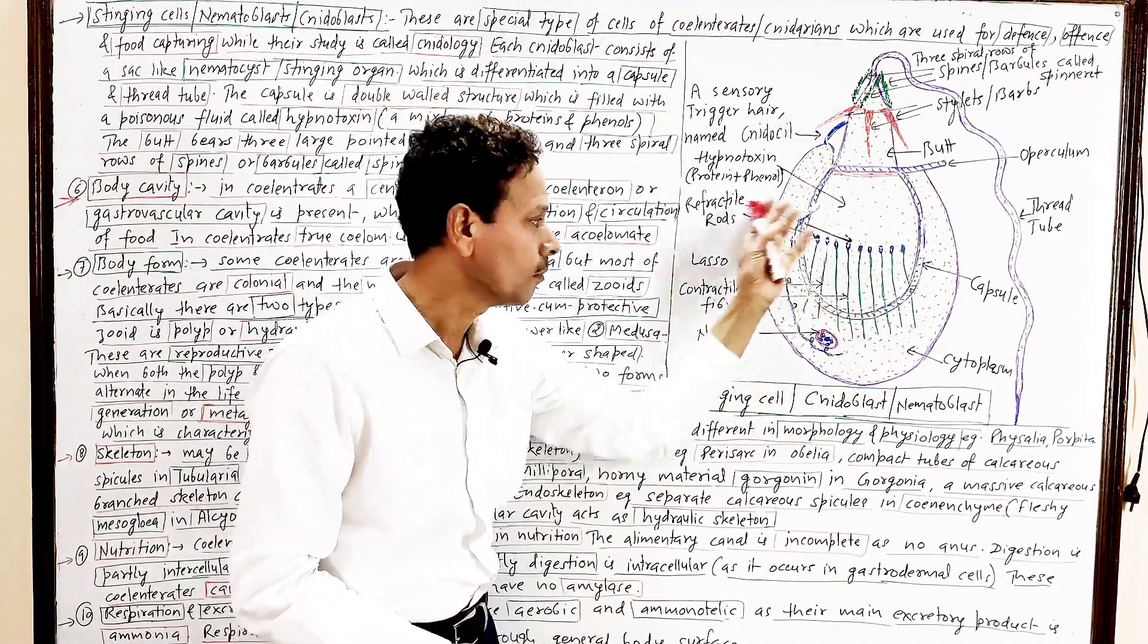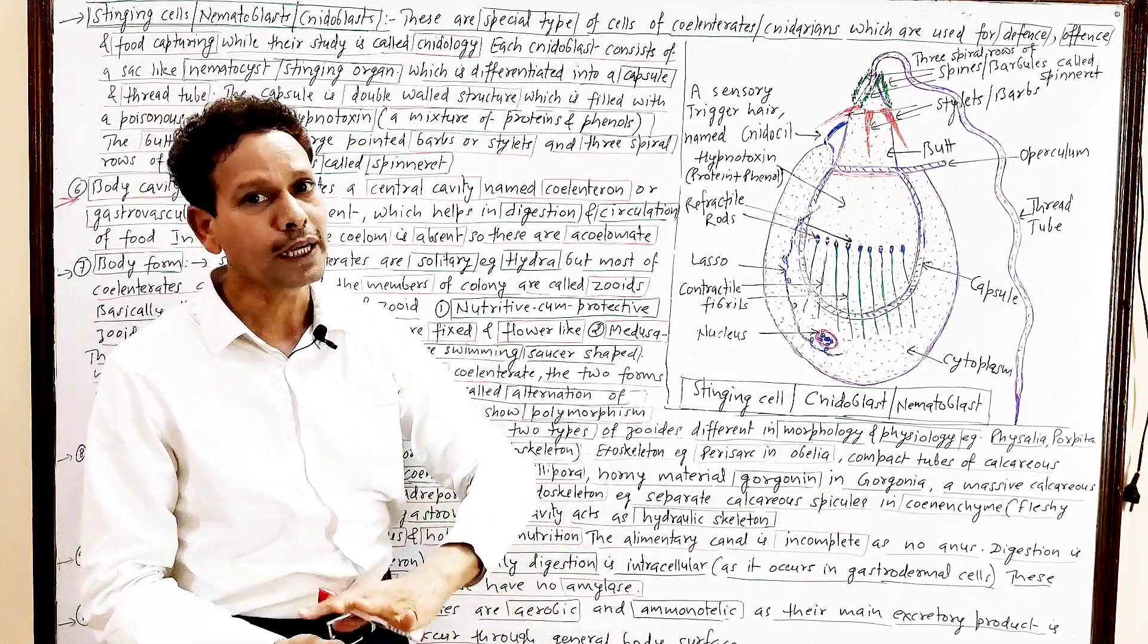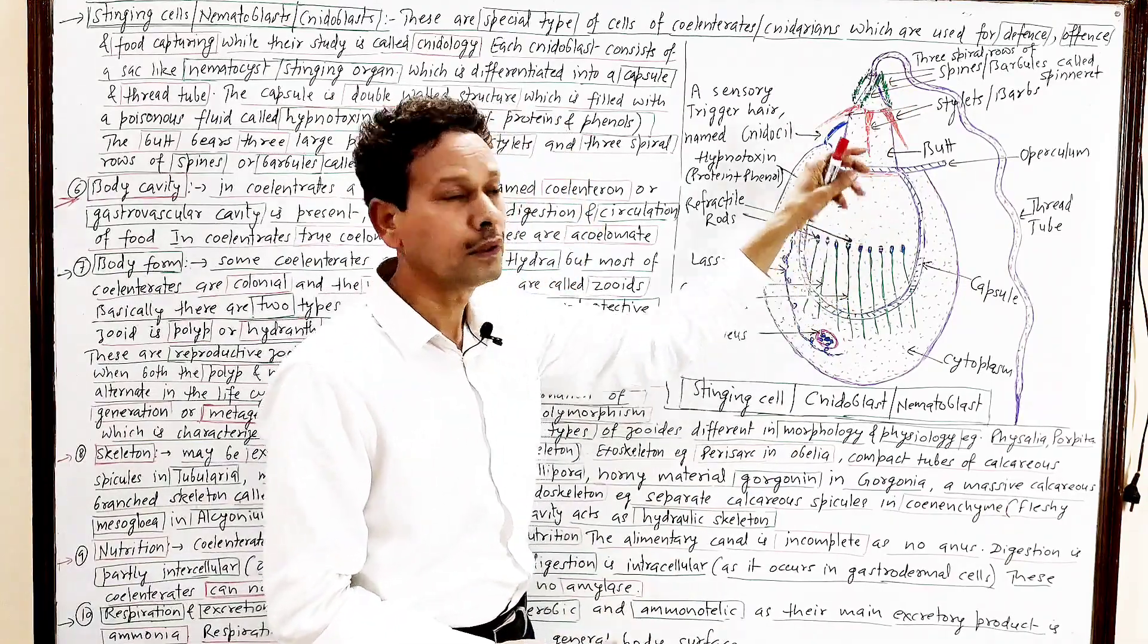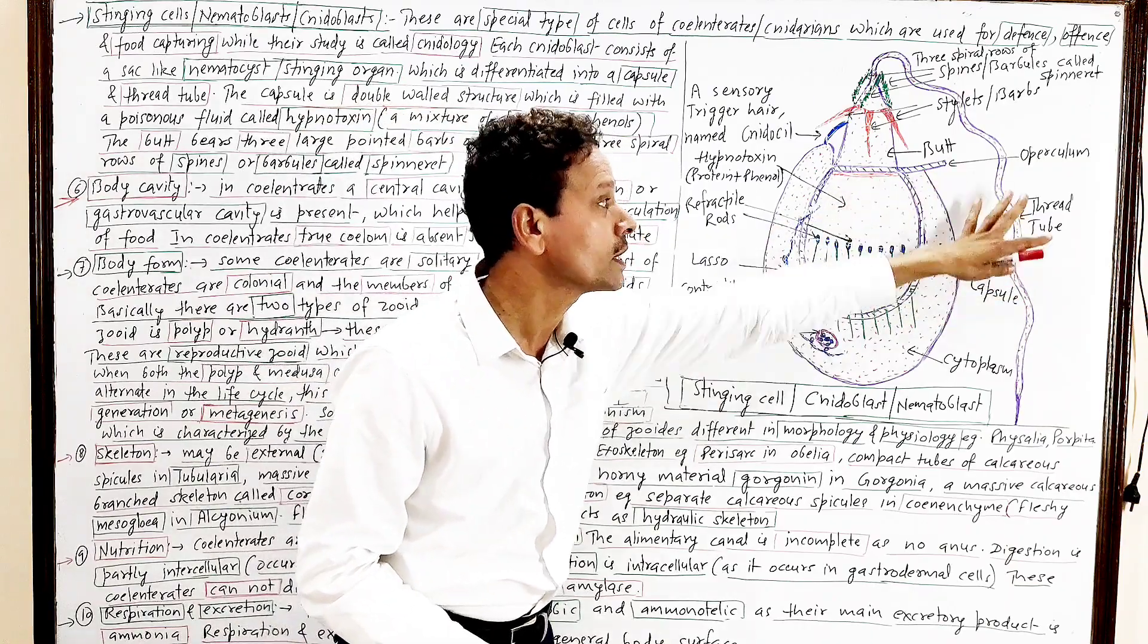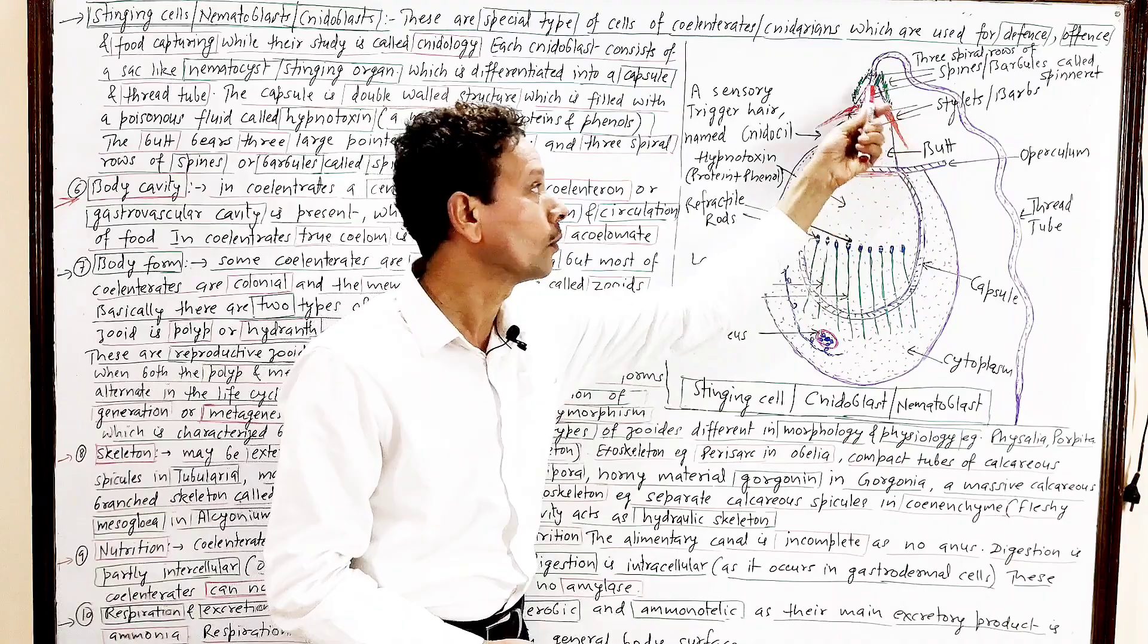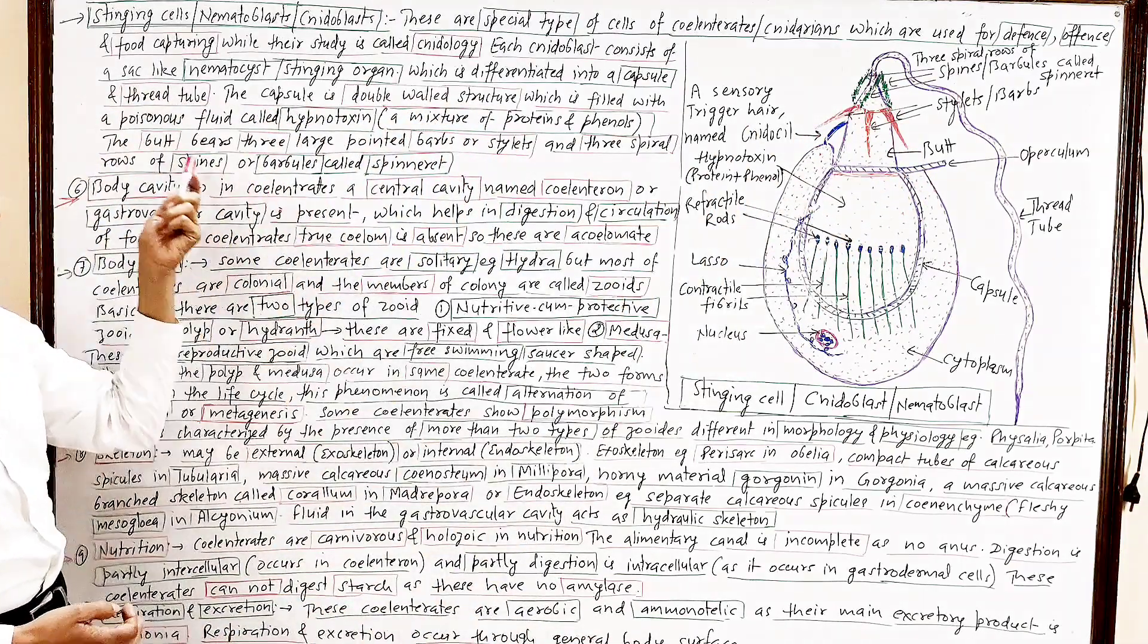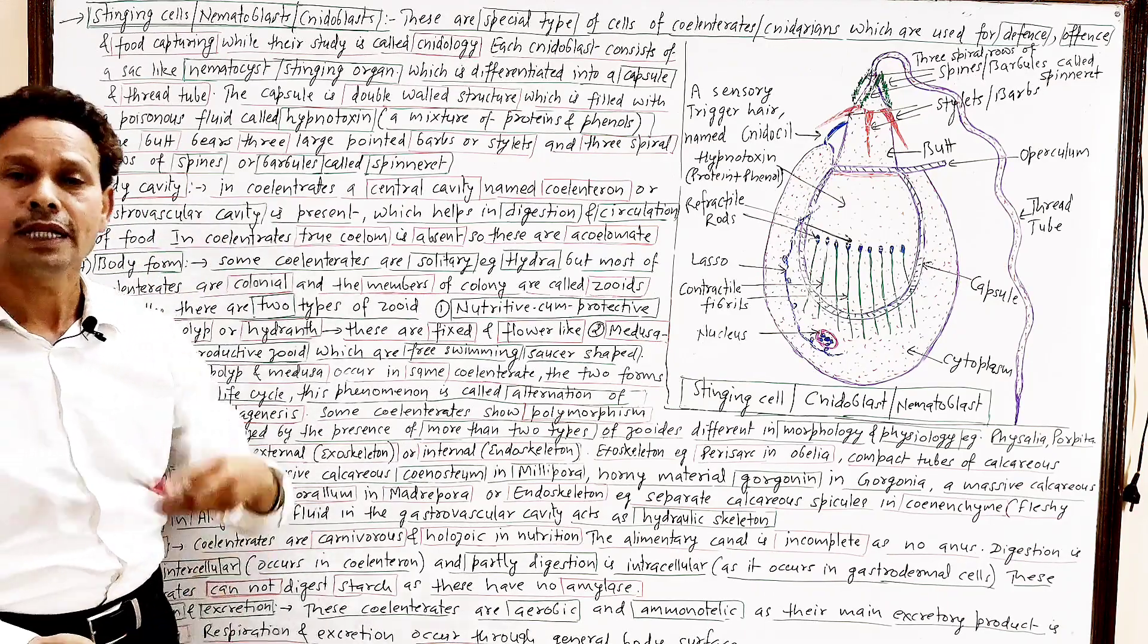In normal conditions, this entire structure is butt, that directed inward, and this tubular structure, this thread tube, that remains coiled around this butt. Next property, next characteristic feature of this phylum, body cavity.